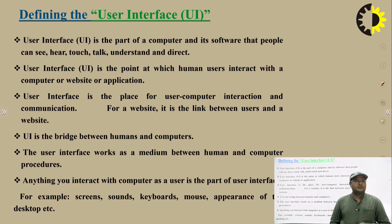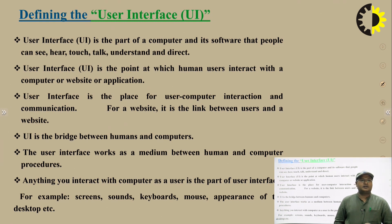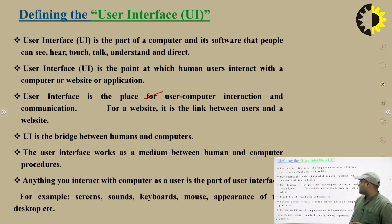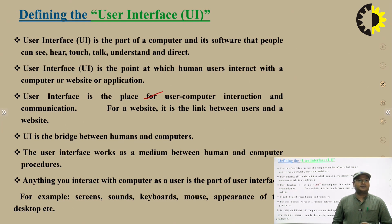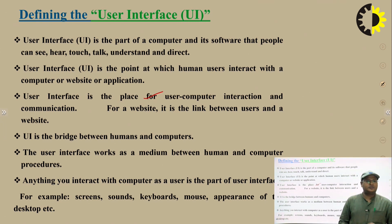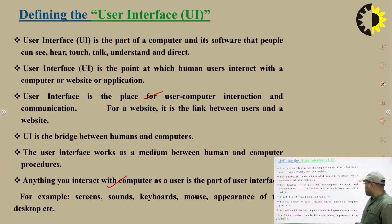What is the user interface? User interface is the part of a computer and its software that people can see, hear, touch, talk to, understand, and direct. It is the point at which a human user interacts with a computer, website, or application — the place for user-computer interaction and communication. For a website, it is the link between users and the website, such as the HTTP URL, which works as an interface. The user interface is the bridge between the human and the computer.